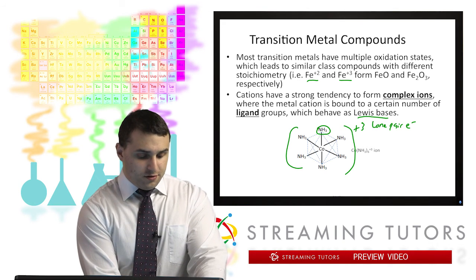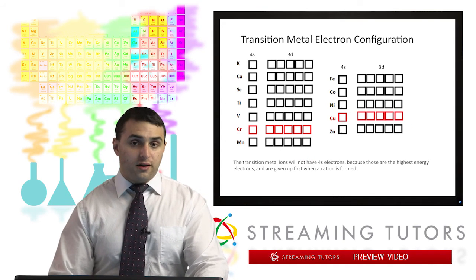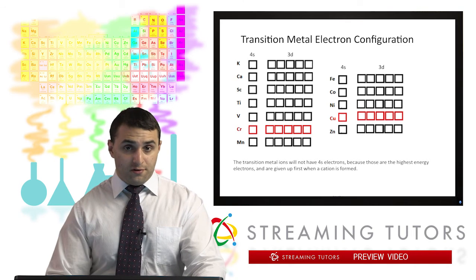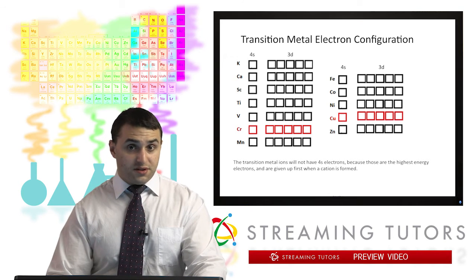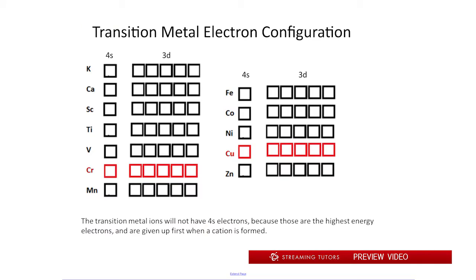For now I just want to review the electron configuration of these transition metals because it's going to be important for us when we're talking about the properties of coordination compounds. So hopefully you remember this. This is just going to be an application of the Aufbau principle where we're filling in the electrons that are in the valence electron shell of each of these compounds.